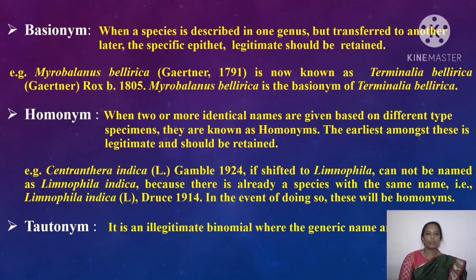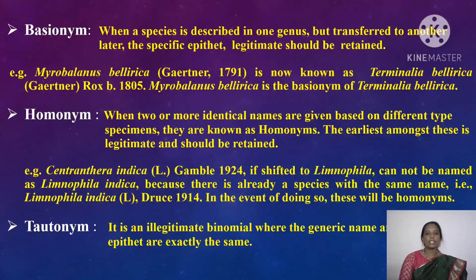Tautonym. A tautonym is an illegitimate binomial where the generic name and specific epithet are exactly the same. For example, Malus malus — where both genus and species are 'Malus'. These types of names are rejected.